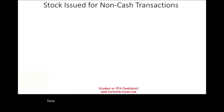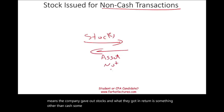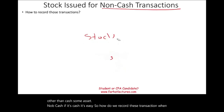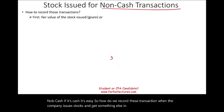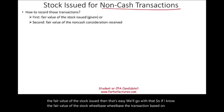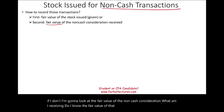Now let's discuss issuing stock in non-cash transactions. This means the company gave out stock and received something other than cash — some asset — in return. How do we record these transactions? First, if we know the fair value of the stock issued, we base the transaction on that. Or if we don't know the stock's fair value, we look at the fair value of the non-cash consideration received.